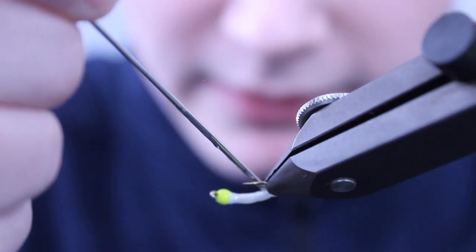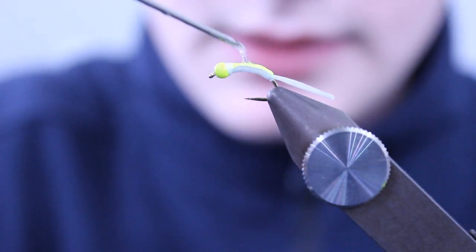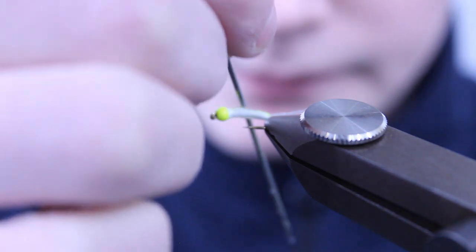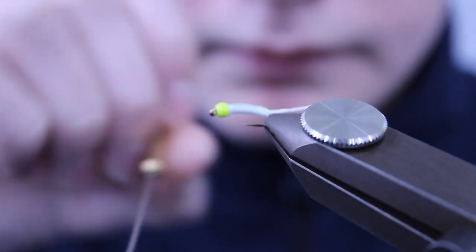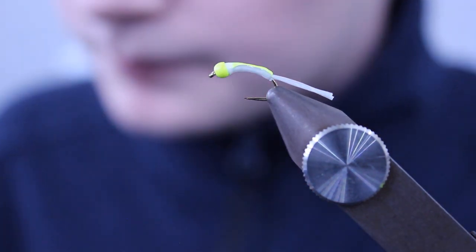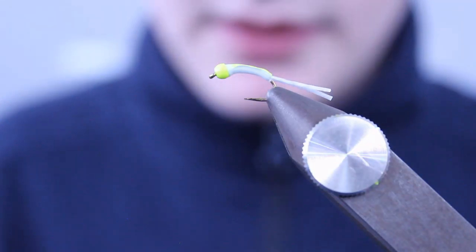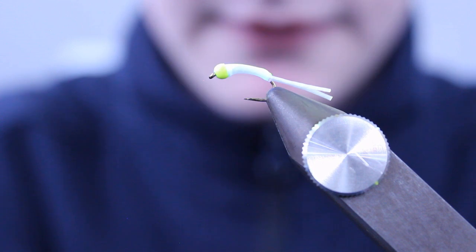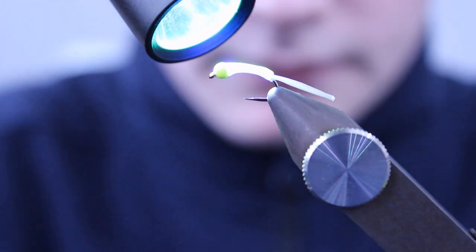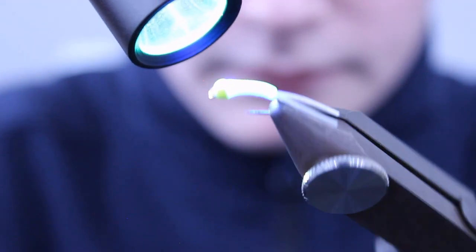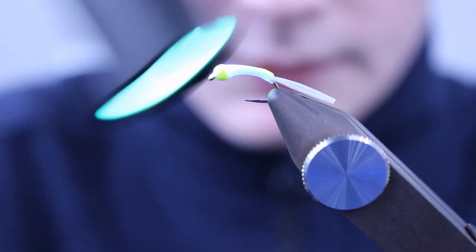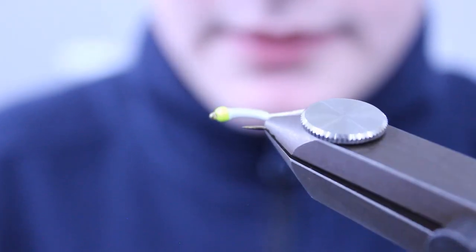Work the resin so that you get a shape you're happy with and the fly is evenly covered. Once you're happy, bring in your torch to cure it. The torch I use is a Gulff Pro 365 series UV flashlight. Once you're happy, that is the fly complete.